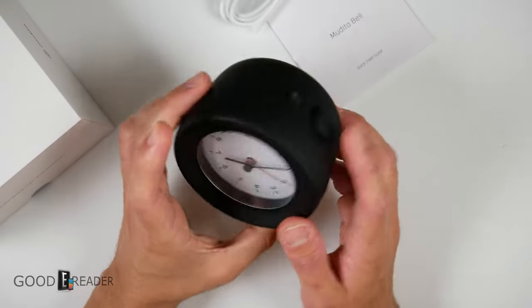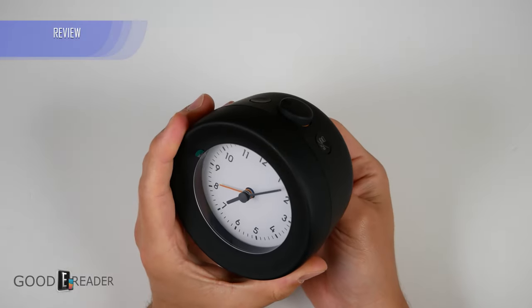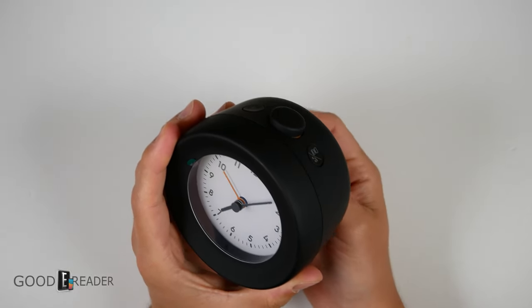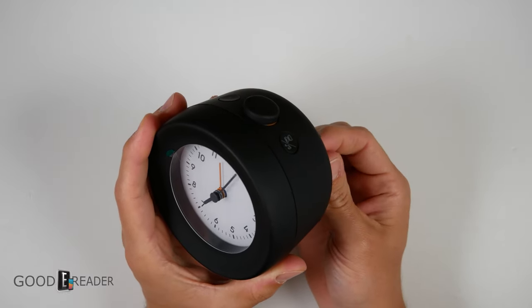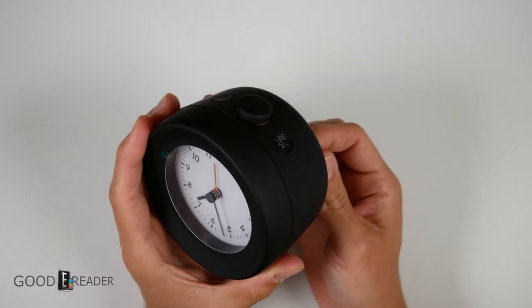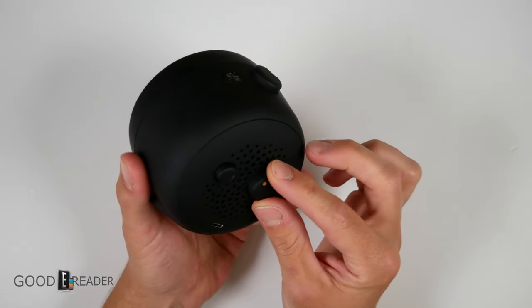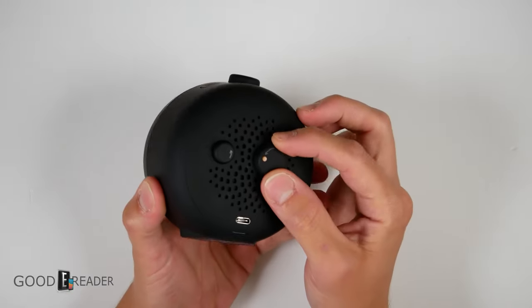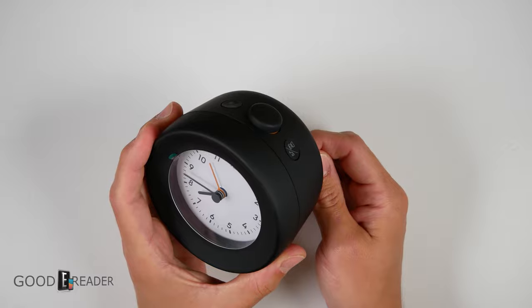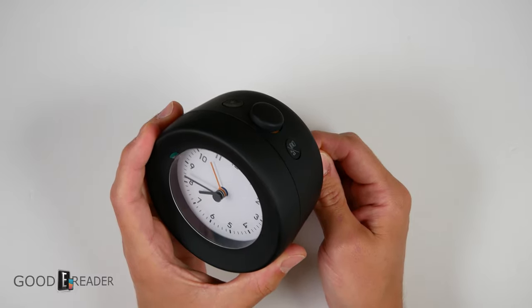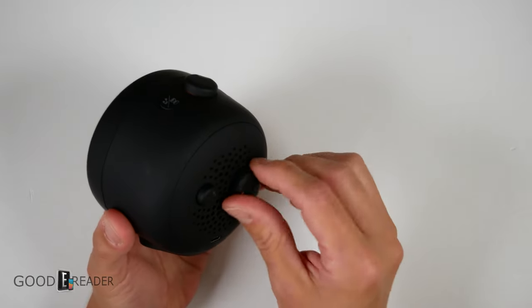On the back of the unit you have two dials. You have this one that does the second hands, and then you have the smaller one that does the hour and minute hands. They recommend you only turn it the way that they have written on the actual backing to avoid damaging the mechanism.